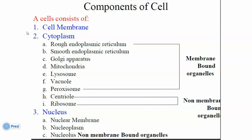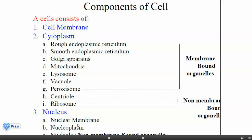Components of the cell: we have the cell membrane, we have the cytoplasm. In the cytoplasm, we have the organelles — some organelles are membrane-bound and some are not membrane-bound. And we have the nucleus, the nuclear membrane, the nucleoplasm, and the nucleolus.